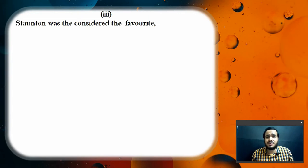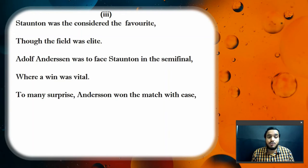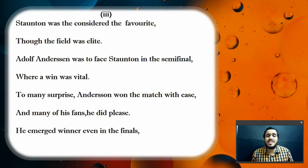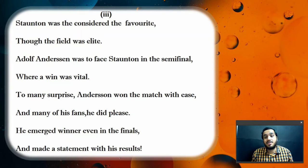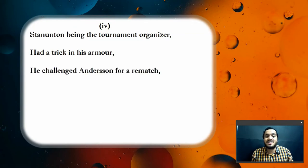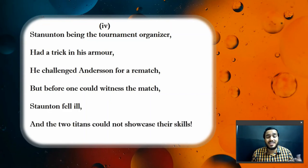Staunton was considered the favorite, though the field was elite. Adolph Andersson was to face Staunton in the semifinal, where a win was vital. To many's surprise, Andersson won the match with ease, and many of his plans did please. He emerged winner even in the finals and made a statement with his results. Staunton, being the tournament organizer, had a trick in his armor — he challenged Andersson for a rematch. But before one could witness the match, Staunton fell ill and the two titans could never showcase their skills.